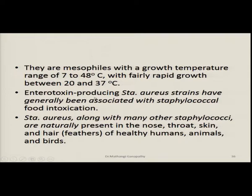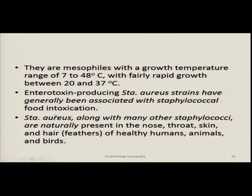The enterotoxin-producing Staphylococcus aureus strains have generally been associated with Staphylococcal food intoxication. It is those strains which can produce enterotoxin that are associated with the food-borne disorder. Along with many other staphylococci, Staphylococcus aureus is naturally present in the nose, throat, skin and hair — and in feathers in the case of poultry — of healthy humans, animals and birds.